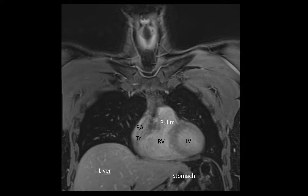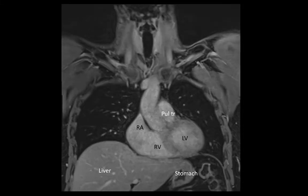The stomach has also come into view. Here we can see more clearly the intraventricular septum which is between the right and left ventricles. We can also see now the continuity of the left ventricle with the aorta.